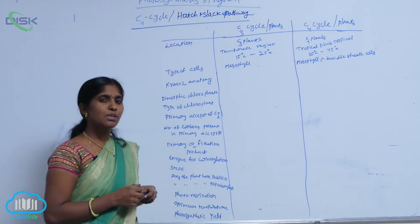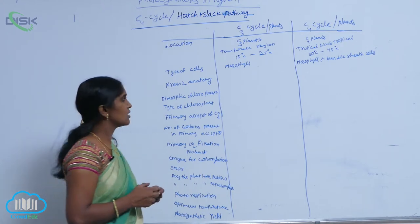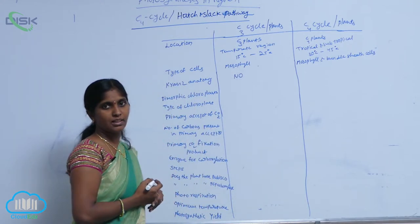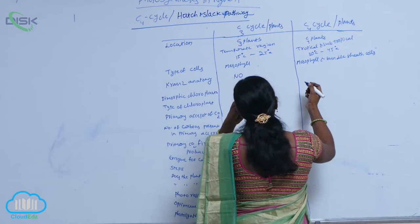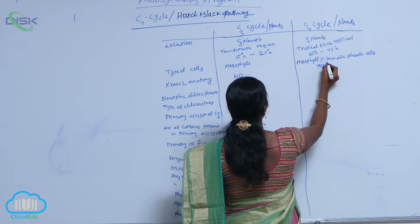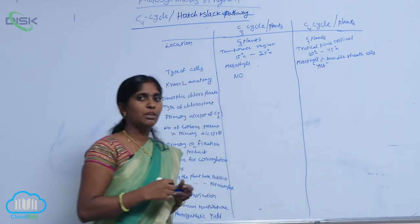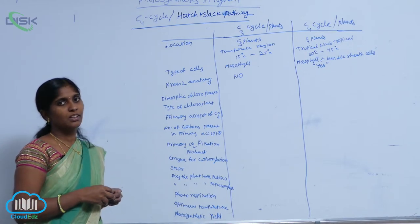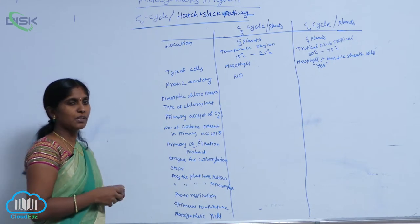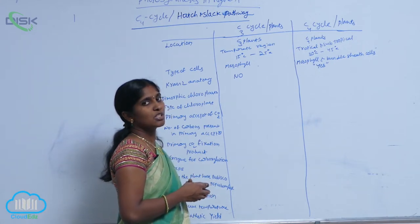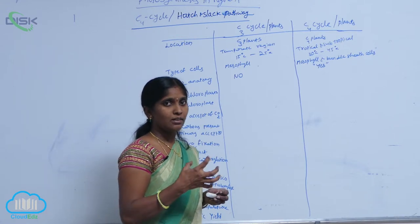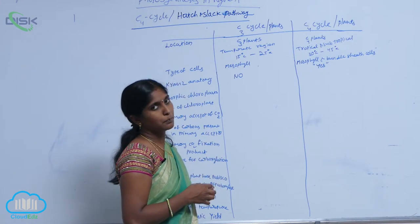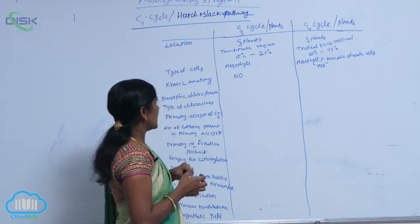Is Kranz anatomy present in C3 plants? No, Kranz anatomy is not found in the C3 cycle. But in the C4 cycle, Kranz anatomy is present. In Kranz anatomy, the bundle sheath cells are located at the center, surrounded by mesophyll cells. The bundle sheath cells are large and are rich in chloroplasts. That is Kranz anatomy.